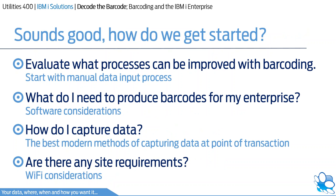The advantages sound good, but what processes should we barcode and where should we start? We need to evaluate the processes that can be improved with barcoding. Within manufacturing companies — whether discrete or process-based, just in time, just in sequence, or lean — they all face challenges to raise operational efficiencies. From existing processes limiting productivity to negligible traceability, you should identify areas that would benefit from improvement. Then there's how to create barcodes, how to capture data, and site considerations including equipment and network requirements.